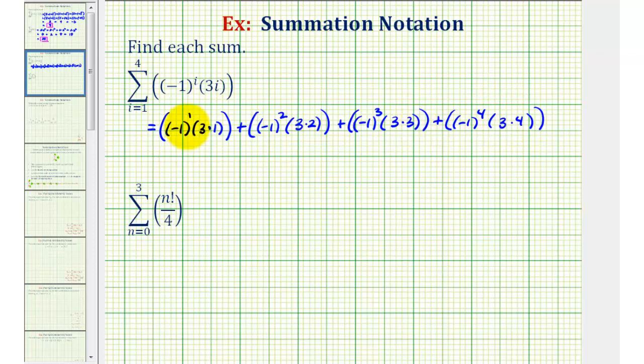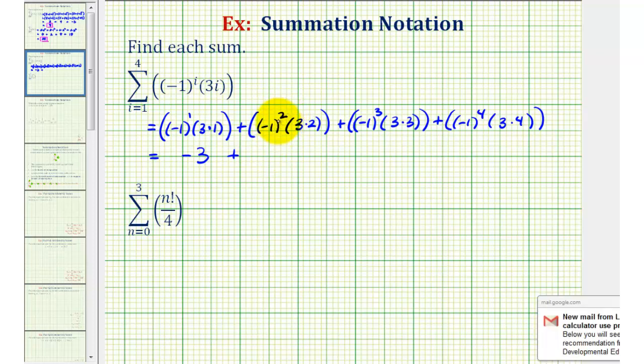Now we'll evaluate each of these and then find the sum. Here we would have negative one times three, that's negative three, plus negative one squared, so that's positive one times six, which is six, plus negative one to the third is negative one, so we have negative one times nine, that's negative nine.